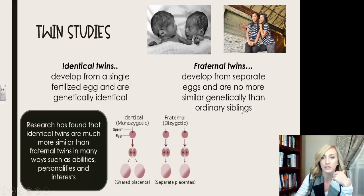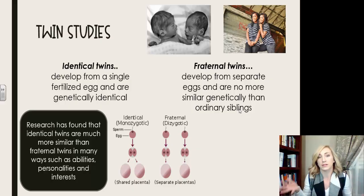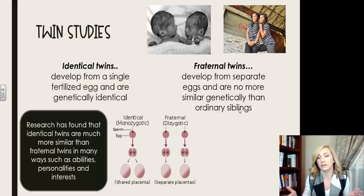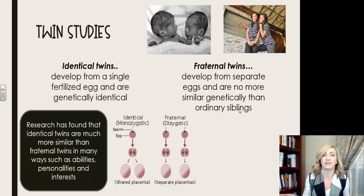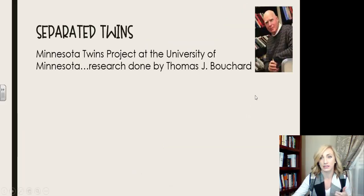Fraternal twins develop from two separate eggs — the female releases two eggs, two separate sperm fertilize them, and they develop in two separate placentas. They are no more genetically similar than ordinary siblings; they just happen to be in the same womb at the same time. Research has found that identical twins are much more similar than fraternal twins in many ways — abilities, personalities, and interests.